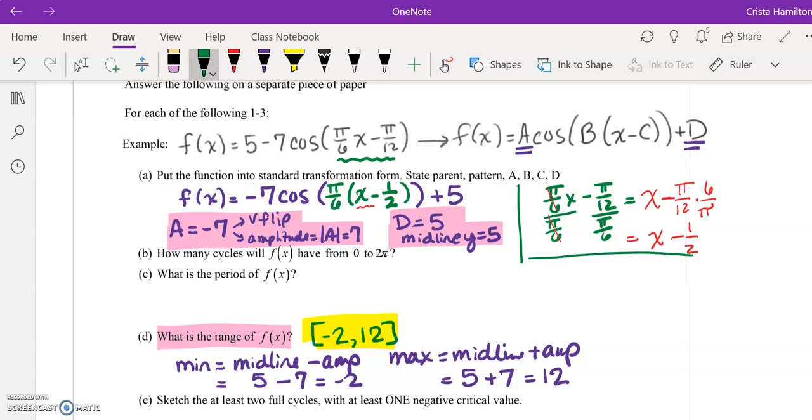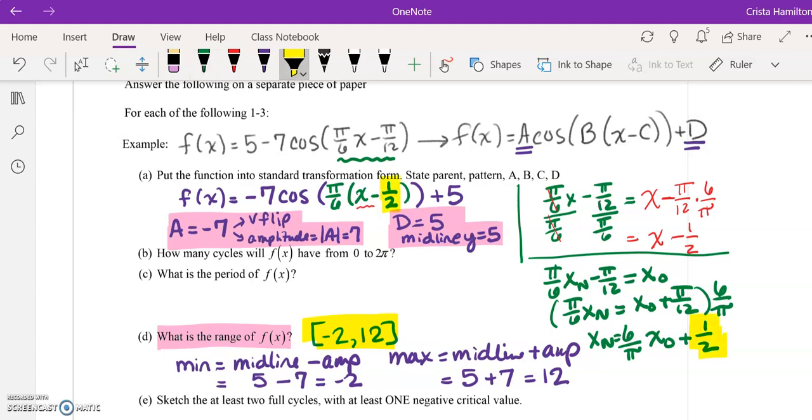Option number two for calculating this would have been to take pi over 6 x new minus pi over 12, set it equal to x old, and solve. Pi over 6 x new equals x old plus pi over 12. And then I multiply both sides by 6 over pi to get rid of the pi over 6, and we get x new equals 6 over pi times x old plus 1 half. And so by doing that solving, this is where we get that our phase shift is 1 half. Your choice, I have a tendency to just do option one because I think that's just as fast and gets me what I want to do, as opposed to using the x old, x new.